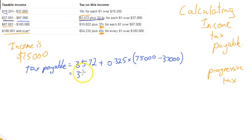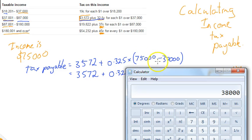I'll just do an extra line here. $3,572 plus 0.325 times whatever's in those brackets there. Calculator time. So you can see $75,000 minus $37,000 is $38,000.